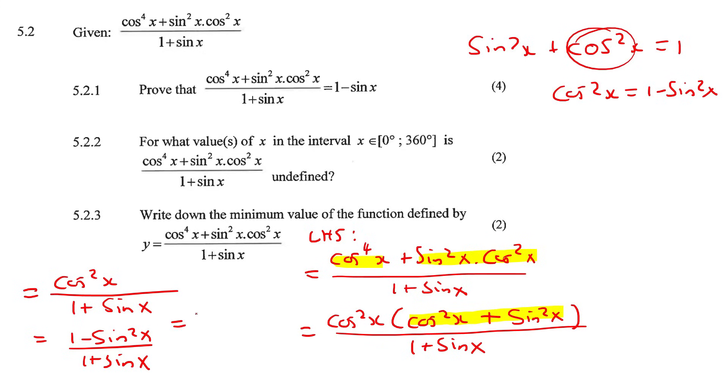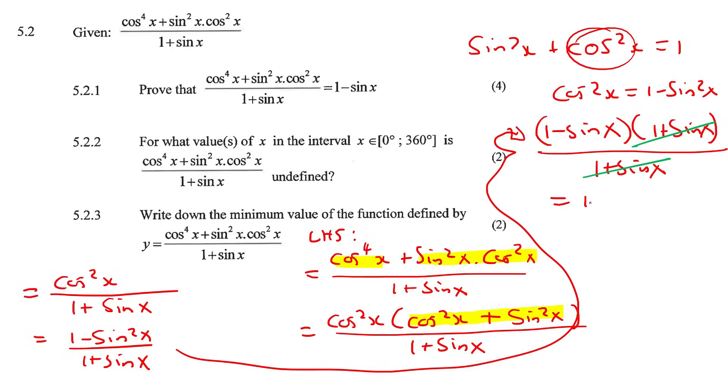We can then rewrite that as 1 minus sin times 1 plus sin. That's going to become 1 minus sin, 1 plus sin, over 1 plus sin. Now these two can now cancel, and therefore we get 1 minus sin x, which is what they wanted.